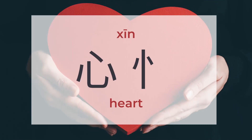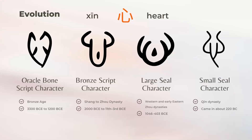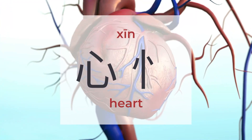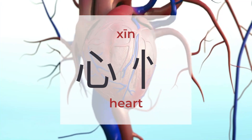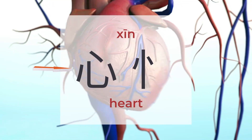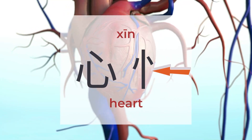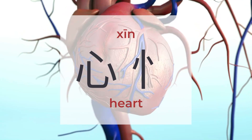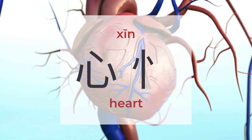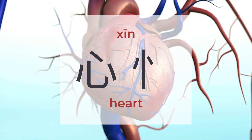心 means heart. There are around 1,115 characters to be found under 心. 心 is a pictogram with two forms. One is the complete form 心, while the other is the standing form. The complete form shows on the center or bottom of characters, while the standing form appears on the left.